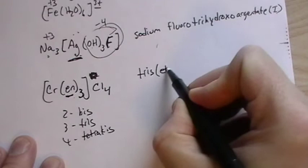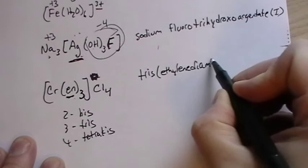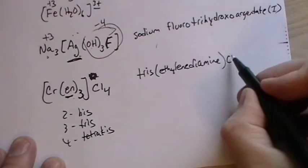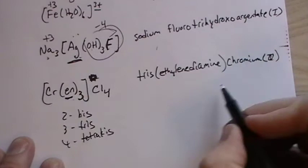So if we look at this, this would be called tris ethylene diamine. I think the book uses the parentheses, you don't have to, but that does help out as well. So tris ethylene diamine, this must be plus four, so this is chromium(IV), because we don't change it to chromate, because it's the cation, and then we just call it chloride.